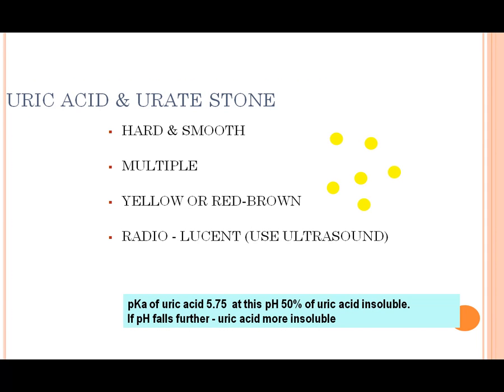Uric acid stone: it is hard and smooth, multiple, yellow, red, or brown in color.